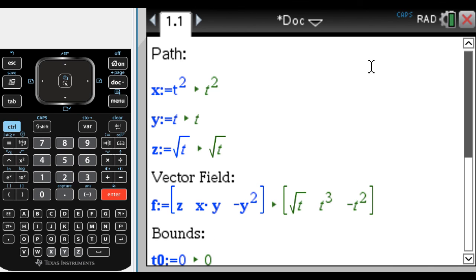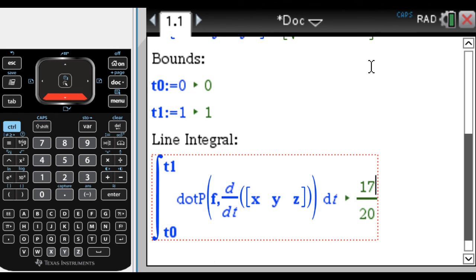T goes from 0 to 1, which makes sense. And then the line integral is 17 over 20. So this is a really helpful thing. I use it.